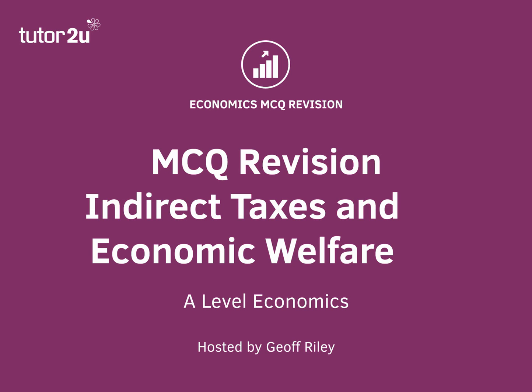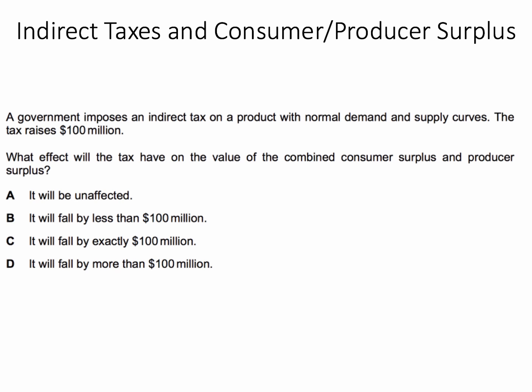This question is going to really test and challenge your understanding of the impact of taxes on welfare, in particular consumer and producer surplus. A government imposes an indirect tax on a product. We're told there are normal demand and supply curves — demand curve sloping downwards, supply curve sloping upwards. The tax raises $100 million. What effect will this tax have on the value of the combined consumer surplus and producer surplus?